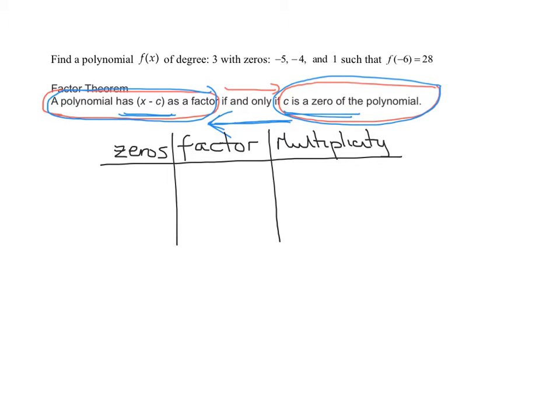We're given these three zeros here. The first one is x equals negative 5. What factor goes with it? From the factor theorem, if positive c is a zero, then (x - c) has to be a factor. This sign has to be the opposite. So the factor that goes with x equals negative 5 is (x + 5).